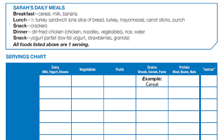For dinner she had stir-fried chicken which includes chicken, noodles, and vegetables. She also had rice and water. Where would we place the chicken? Where would we place the noodles in the serving chart? What about the vegetables, rice, and the water? For her second snack she had a yogurt parfait which included low-fat yogurt, strawberries, and granola. Where would we place low-fat yogurt? How about the strawberries and granola?